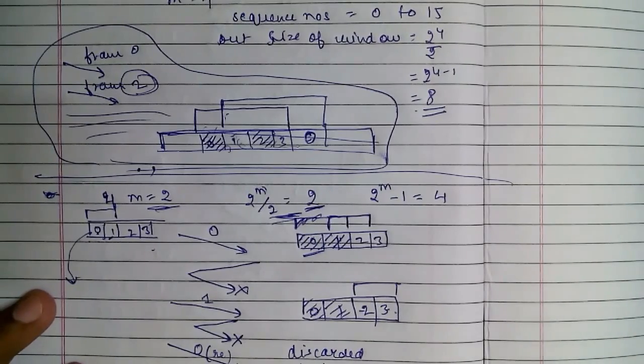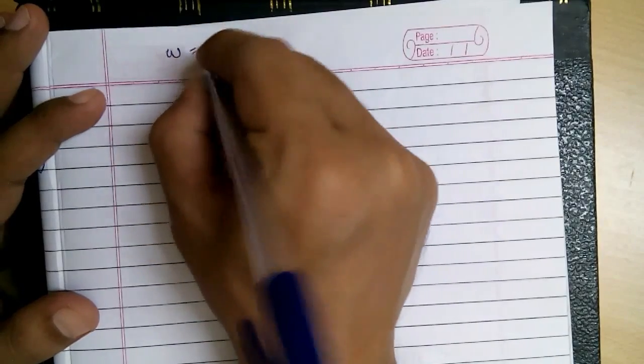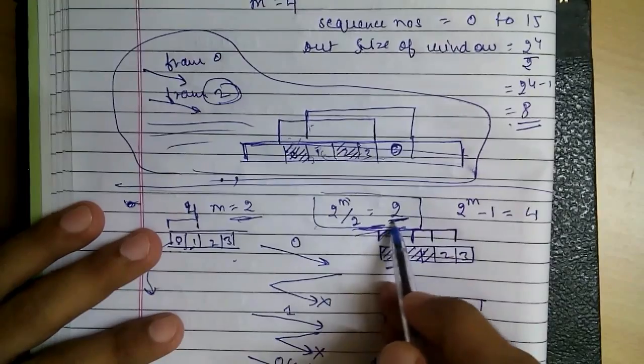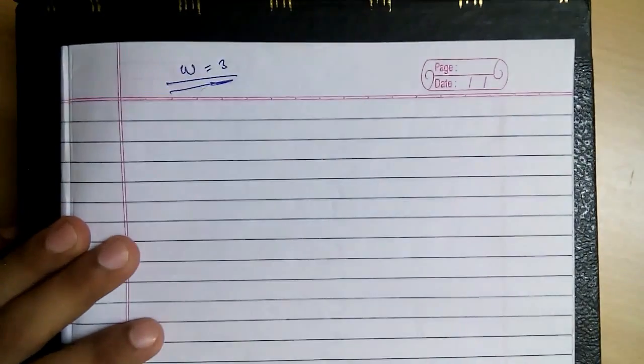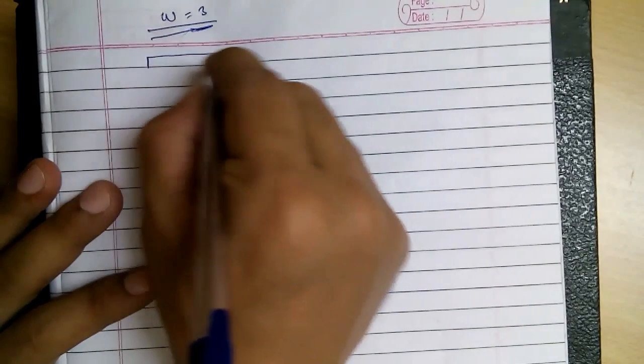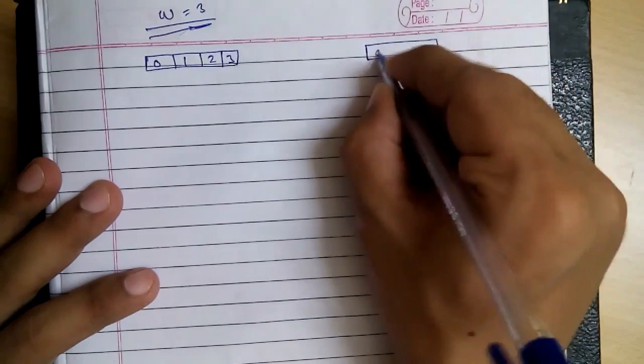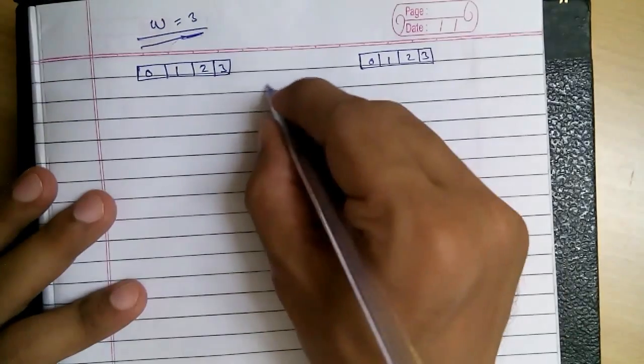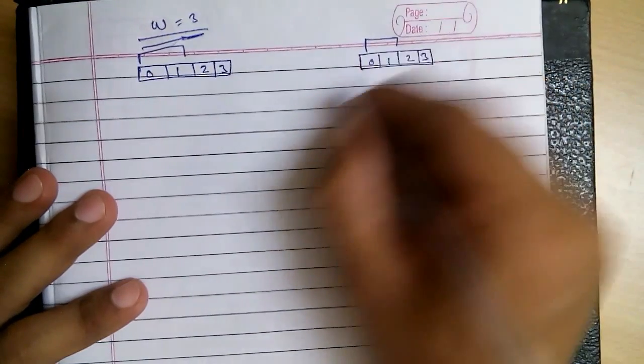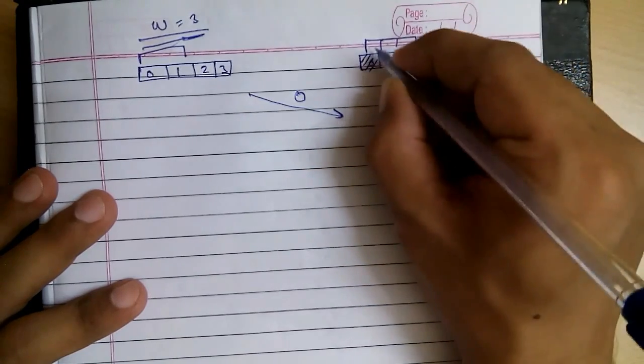Now, to show you what will happen if it is not. Let's say if the window size was 3, instead of the actual as per the rules. If the window size is more than 2 raised to M by 2, so say this window size is 3. It should not be actually, but let's take as an example. 0, 1, 2, 3 and 0, 1, 2, 3. So we will follow the same pattern as our previous example. Say this is our window.